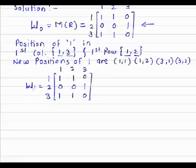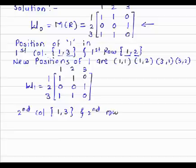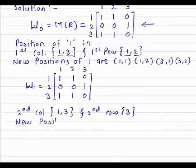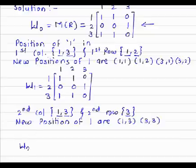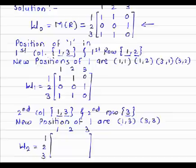Again, we do the same method for the second column and second row. For the second column, the position of 1 is 1,3, and for the second row is 3. So the new positions of 1 are (1,3) and (3,3). The new matrix W2 is 1, 2, 3 by 1, 2, 3.